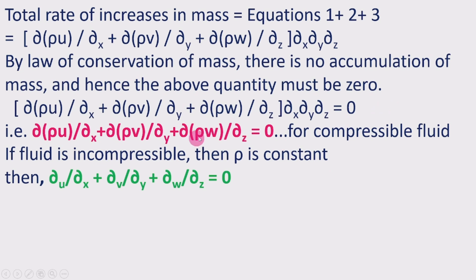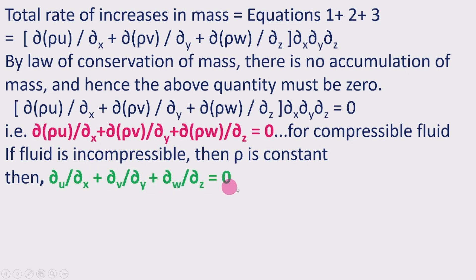This equation — (∂/∂x)(rho·u) + (∂/∂y)(rho·v) + (∂/∂z)(rho·w) = 0 — is the continuity equation for compressible fluids, because here the fluid density can change. For incompressible fluids, rho is constant and can be taken outside all three terms, giving: ∂u/∂x + ∂v/∂y + ∂w/∂z = 0.